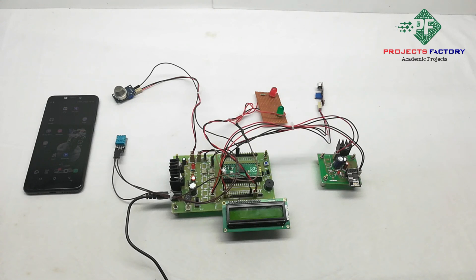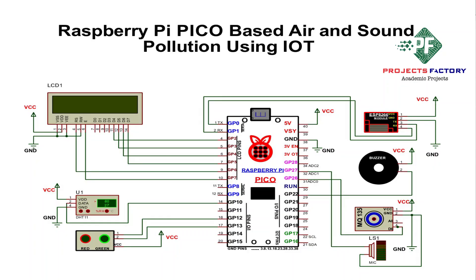Our project circuit diagram looks like this. The IoT module is connected to GPIO pins 0 and 1. Two LEDs, red and green, are connected to GPIO 12 and 13. A buzzer is connected to GPIO 22. The DHT11 sensor is connected to GPIO pin 10. The MQ135 air pollution sensor is connected to GPIO 26, which is an analog pin. The sound sensor is connected to GPIO 27, another analog pin.